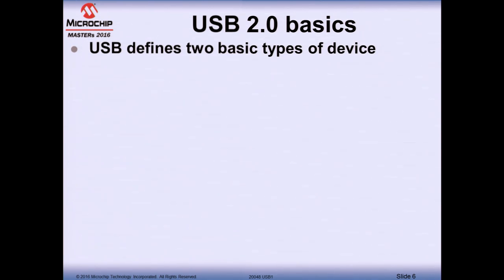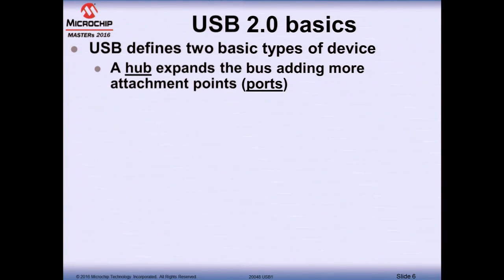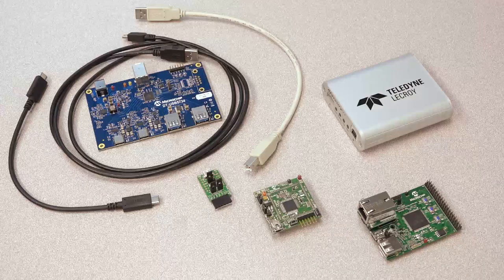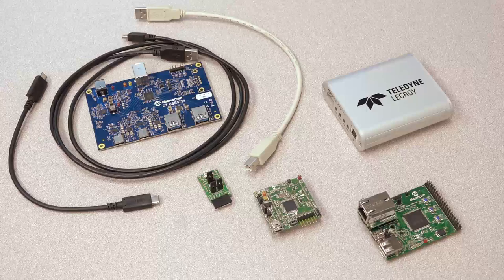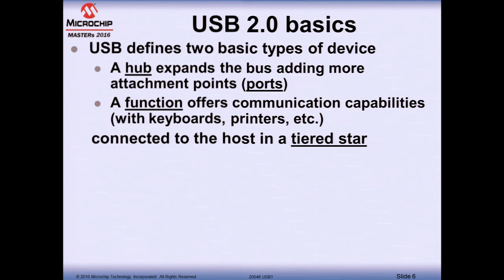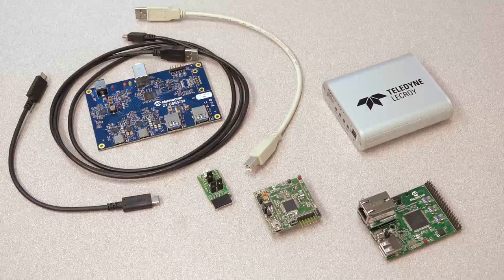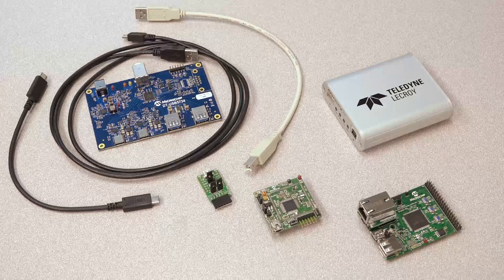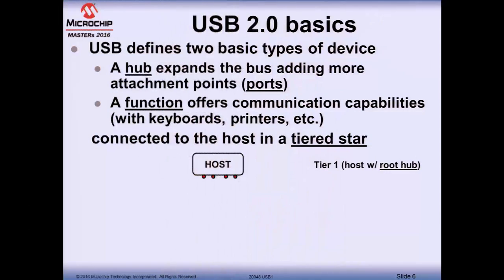Devices are basically the slaves on the USB bus. USB defines two basic types of devices. The first is the hub — like that blue board — whose purpose is to expand the bus by adding more attachment points called ports. The second type is a function that offers communication capabilities, like a keyboard, printer, or mouse. We have different types of devices implemented in our demo boards, like the green one, that we'll use during the class.